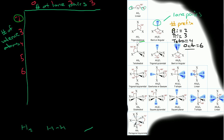These are the trigonal planar shapes. Anything over here in this region is trigonal planar. Tetrahedral covers all of these entries. These are kind of like sub-shapes. If this is trigonal bipyramidal, then all of these will be that as well. And these are all octahedral.